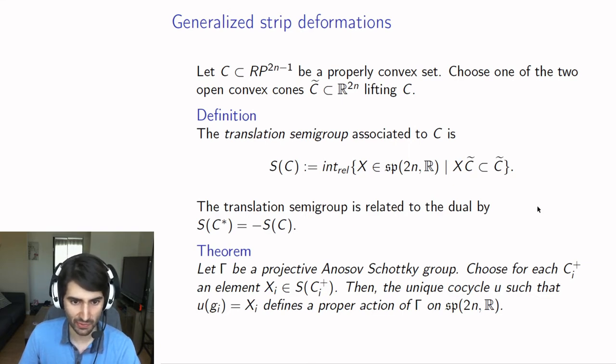The translation semi-group is related to the translation semi-group of the dual by the following relation. If you take the dual set, you get the negative of the translation semi-group. By the way, this is not always non-empty. If your convex set is not symmetric enough, you might have no infinitesimal way of mapping it inside itself.